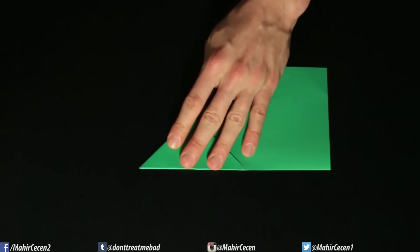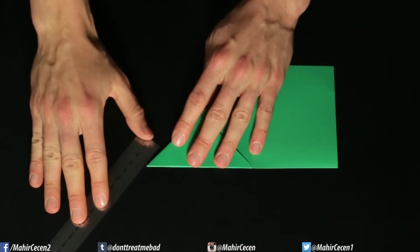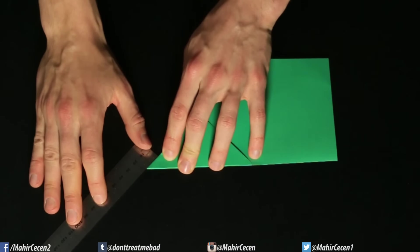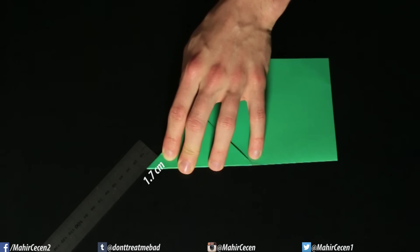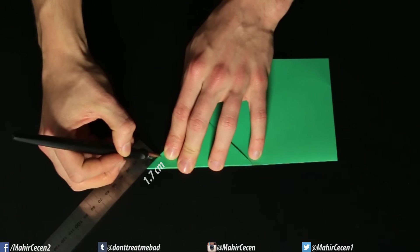And now you might say, Mahir, what's going on, I don't have a ruler. Okay, relax, just estimate. Mark this point for the wing fold.